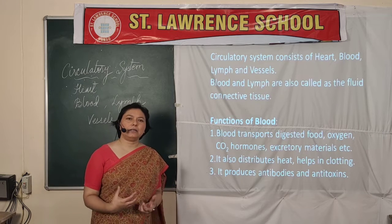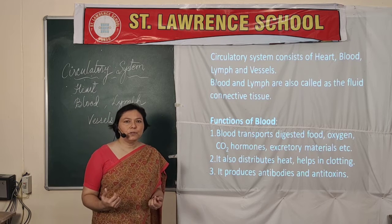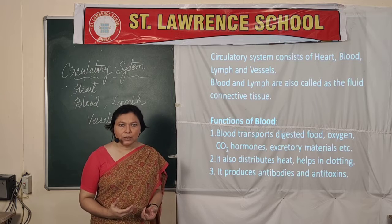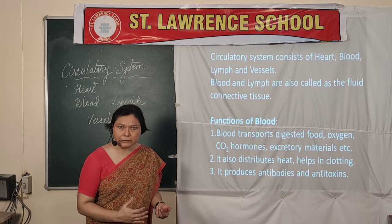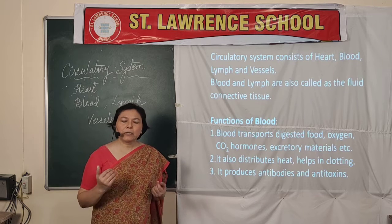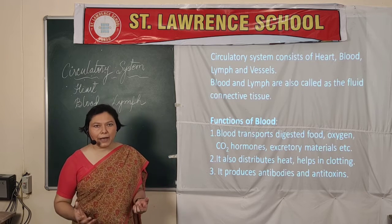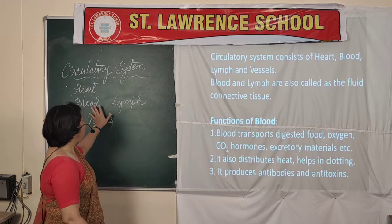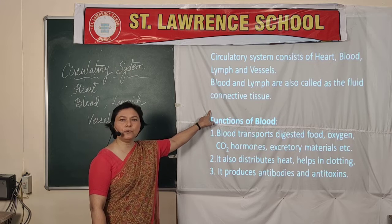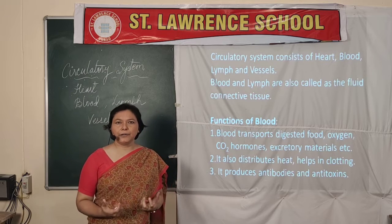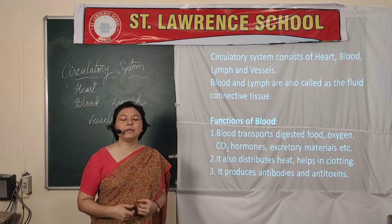Whenever we have to move from one place to another, what do we do? We hire a transport system. The transport system helps us to move from one area to another. Similarly, in our body, we have a system which comprises blood, heart, lymph, and vessels. These four things help to circulate or transport various things in our body.